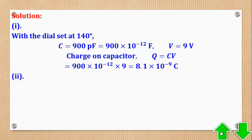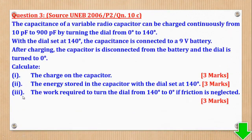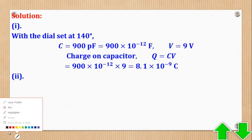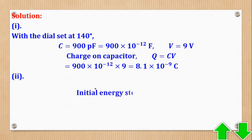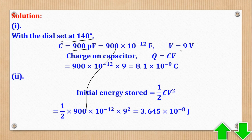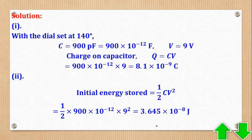That was Roman 1. For Roman 2, they want the energy stored in the capacitor with the dial set at 140 degrees. The initial energy stored is given by one-half CV squared. At 140 degrees, capacitance is 900 pF and V is 9V, so we substitute those values and use the calculator to find the answer.